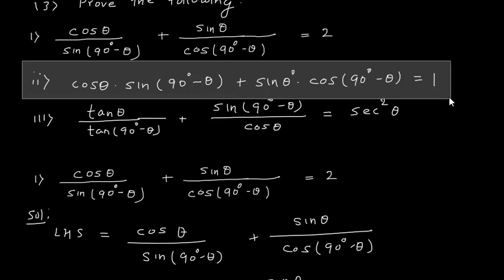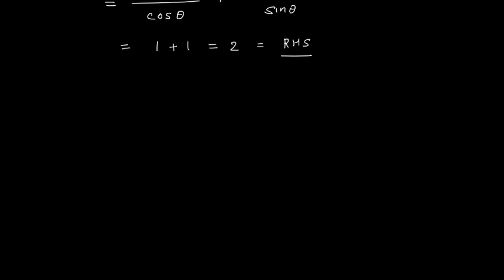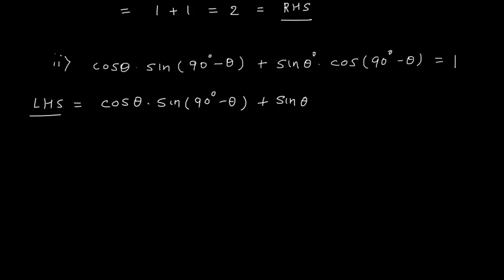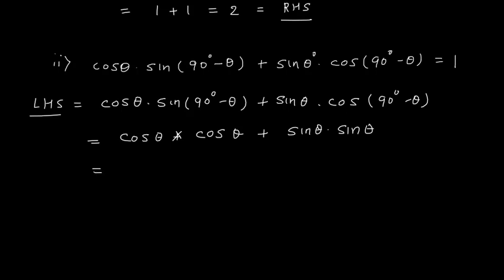For question 2: LHS = cosθ × sin(90° − θ) + sinθ × cos(90° − θ). Since sin(90° − θ) = cosθ and cos(90° − θ) = sinθ, this becomes cos²θ + sin²θ = 1, which is the right hand side.